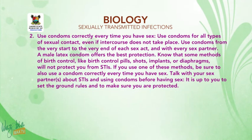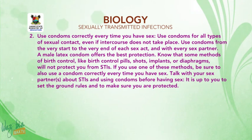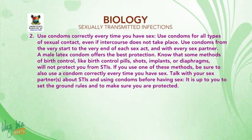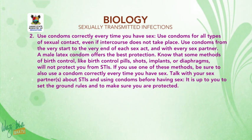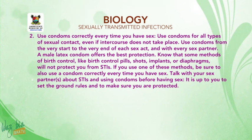Use condoms correctly every time you have sex. Use condoms for all types of sexual contact, even if intercourse does not take place. Use condoms from the very start to the very end of each sex act and with every sex partner. A male latex condom offers the best protection. Note that some methods of birth control like birth control pills, shots, implants, or diaphragm will not protect you from STIs; if you use one of these methods, be sure to also use a condom. Talk with your sex partners about STIs and using condoms before having sex.